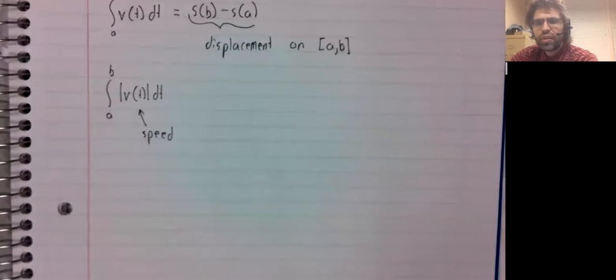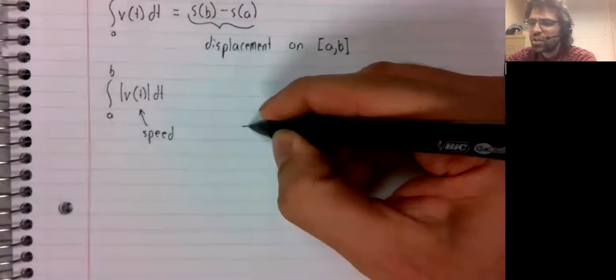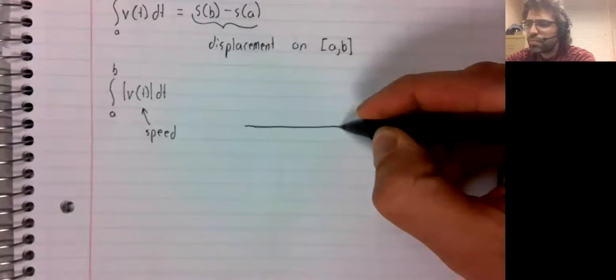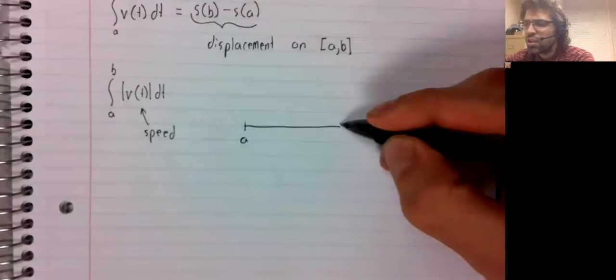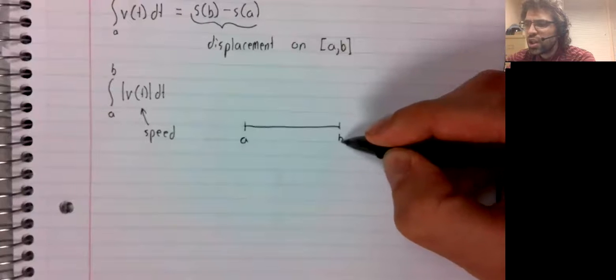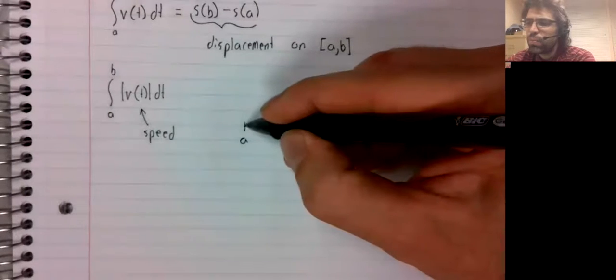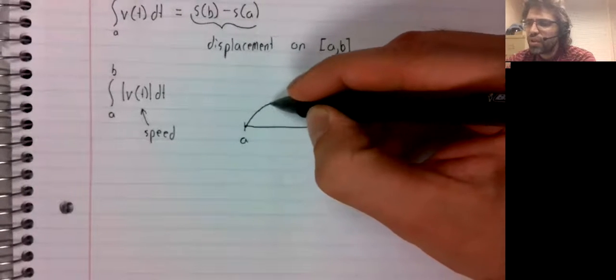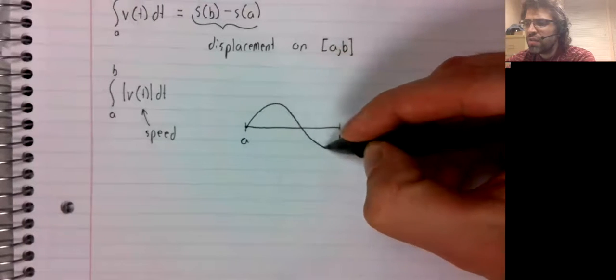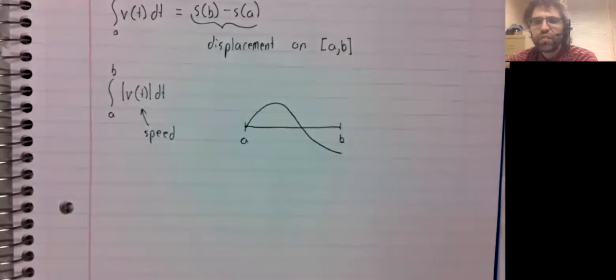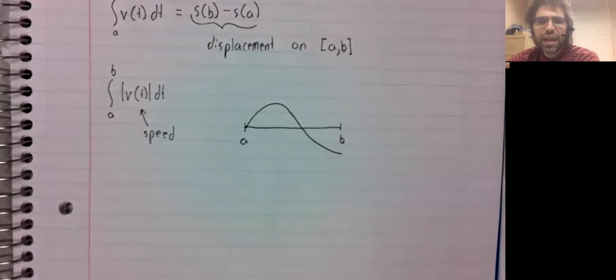Let's investigate this in a concrete case where the velocity changes sign once. The velocity is positive, then the velocity is negative.